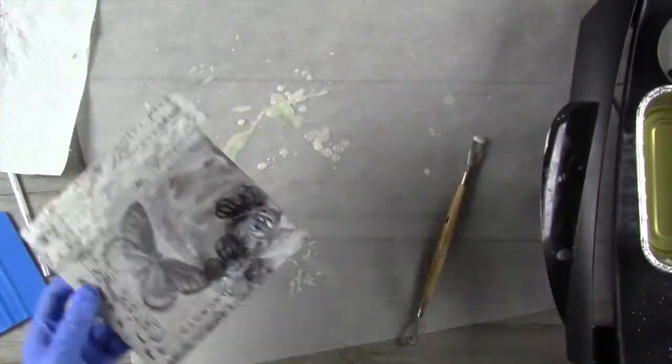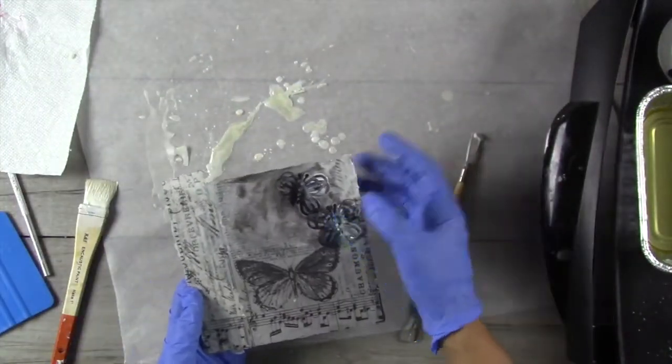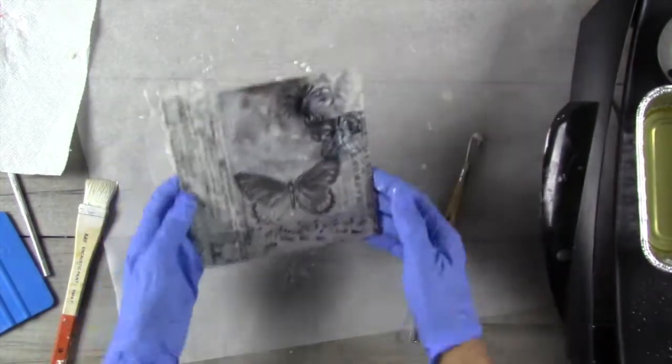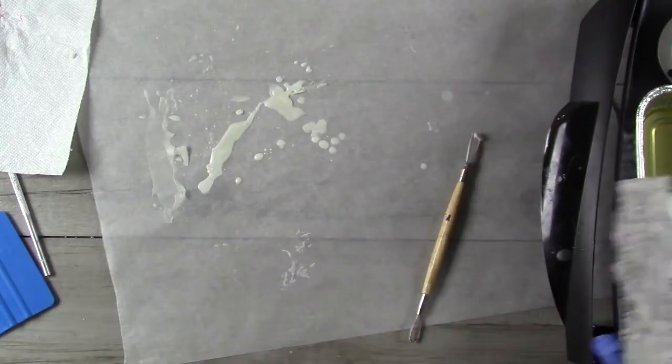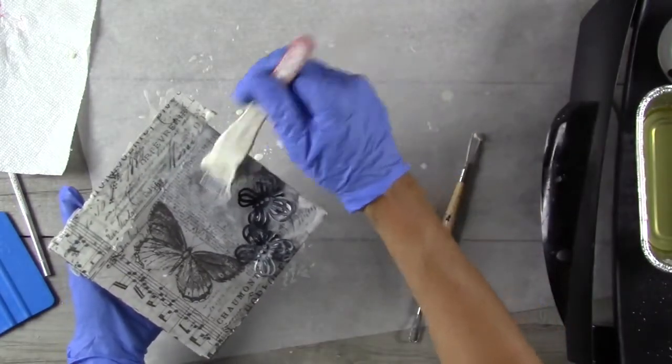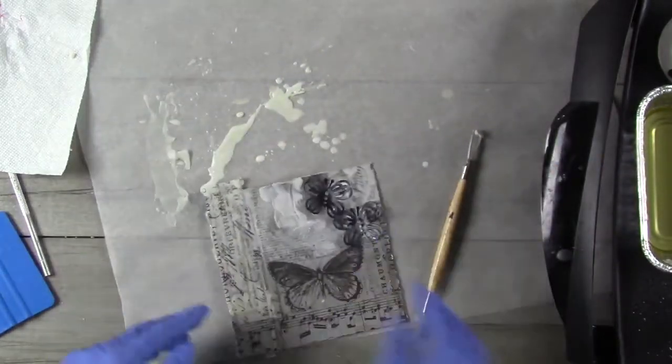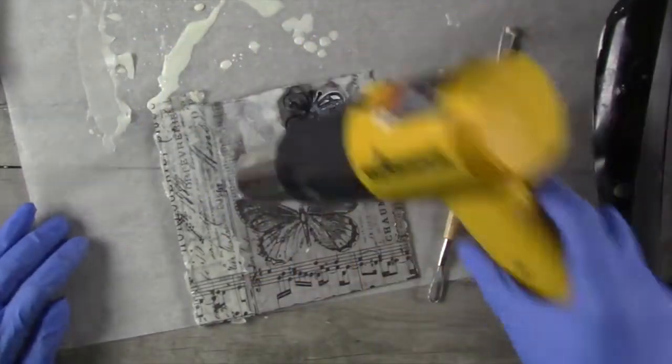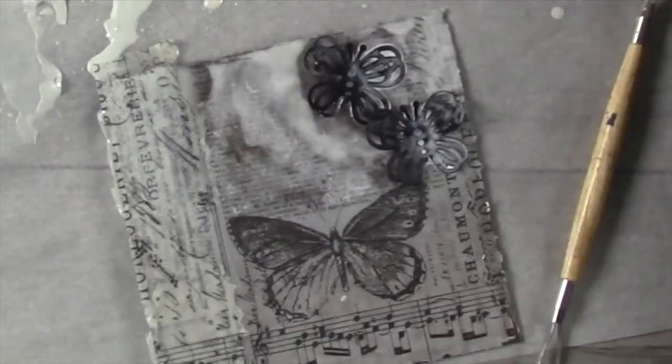One thing I love about working with encaustic is that not only is your paintbrush one of your art tools, but the heat gun becomes an art tool as well. So you can lay the paint on in any pattern you want and then you bring the heat element into it and everything changes.